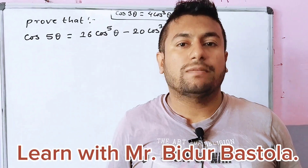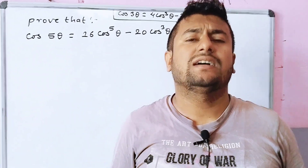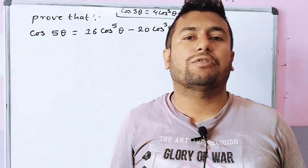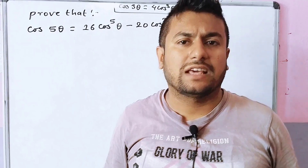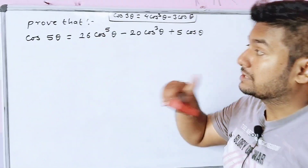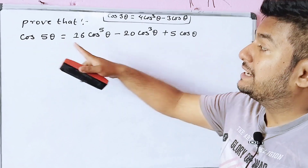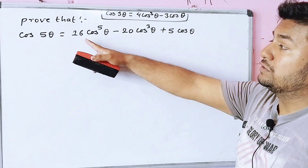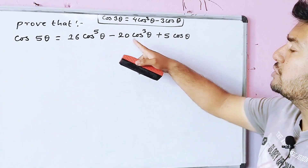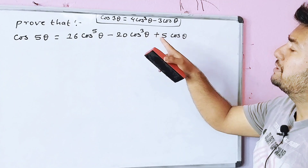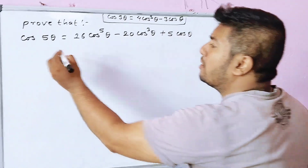Welcome to my YouTube channel. Today I will show you a trigonometric question. Prove that cos 5 theta is equal to 16 cos to the power of 5 theta minus 20 cos cube theta plus 5 cos theta.